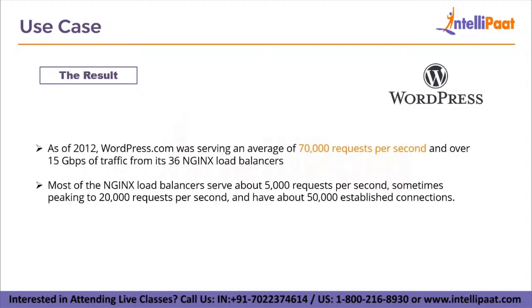Now let's look at the results of using Nginx. As of 2012, WordPress.com was serving an average of 70,000 requests per second per server over 15 Gbps of traffic, using 36 Nginx load balancers — with plenty of room to grow. Most of the Nginx load balancers served about 5,000 requests per second, sometimes peaking to 20,000 requests per second, and maintained about 50,000 established connections. These were the remarkable results of Nginx as a load balancer for WordPress.com.